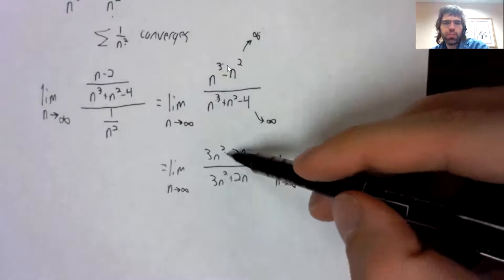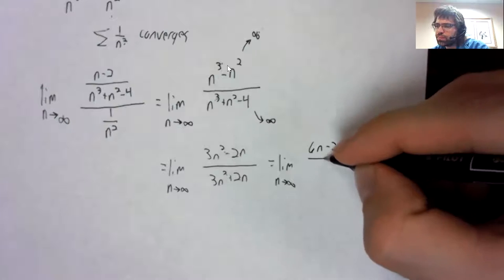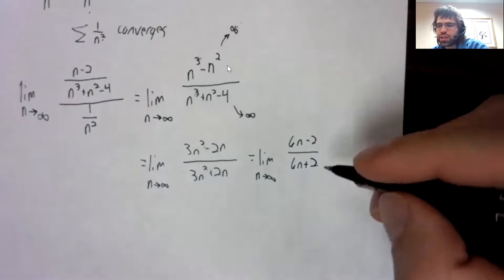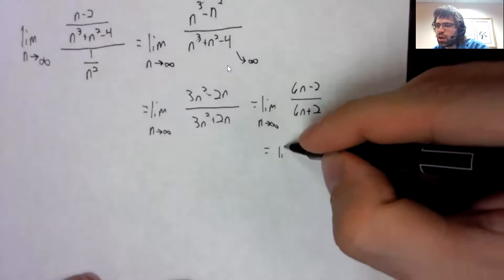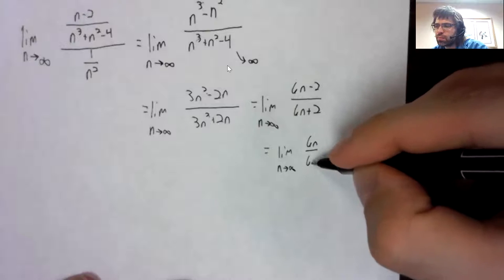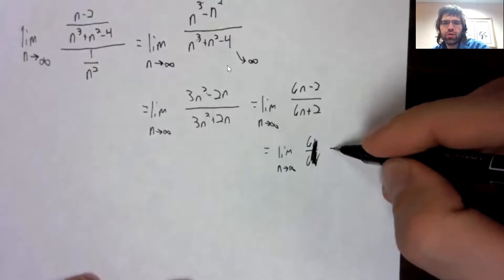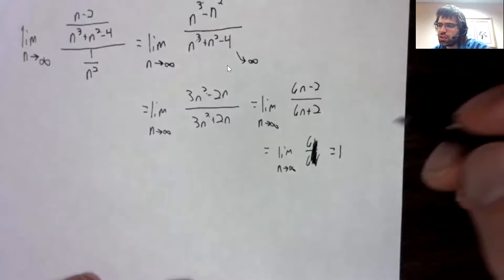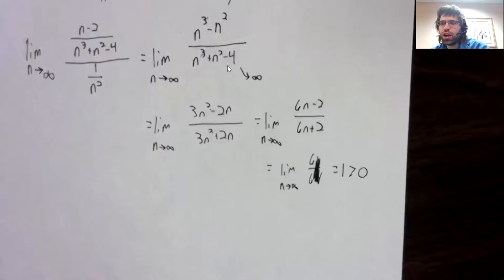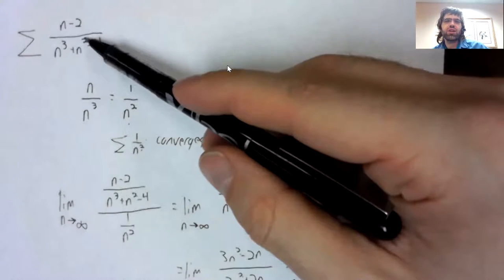Use L'Hôpital's rule one more time. The n's cancel. Six over six is one. And because one is greater than zero, this converging makes that converge.